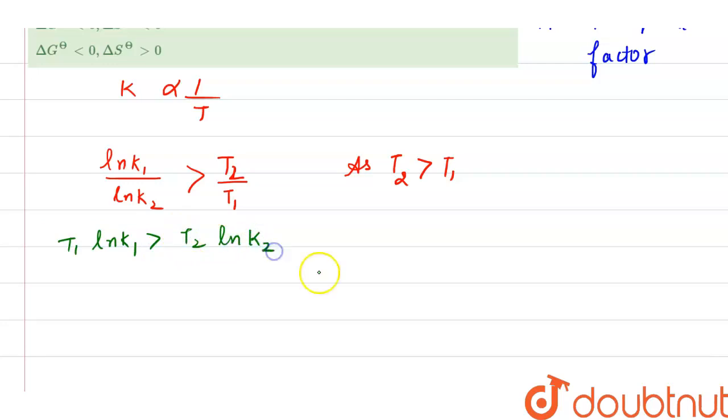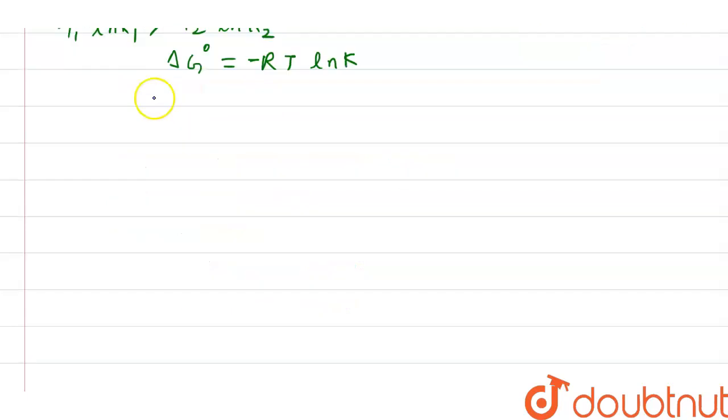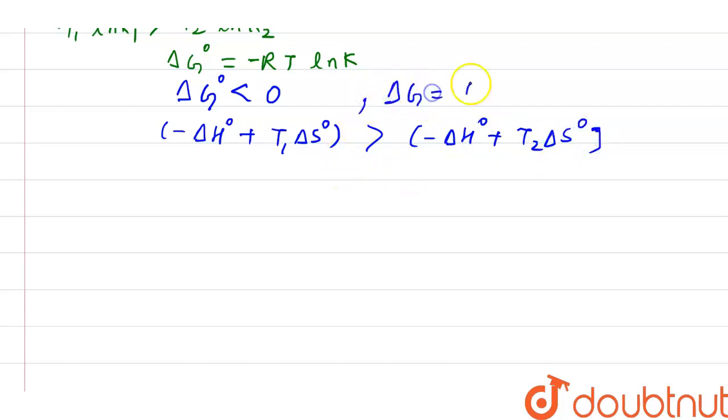As we know that delta G not equal to minus RT log K. Now delta G is standard Gibbs free energy less than zero, then it is spontaneous. And we can write it as minus delta H not plus T1 delta S not is greater than minus delta H not plus T2 delta S not. This is our standard Gibbs free energy equation, which is delta G not equal to delta H not minus T delta S not.